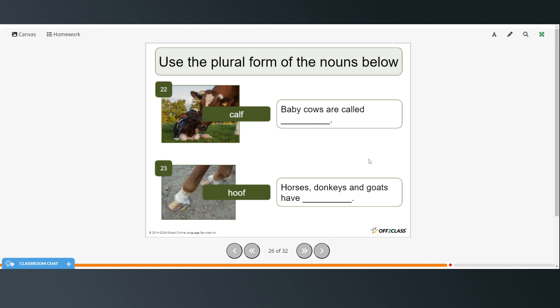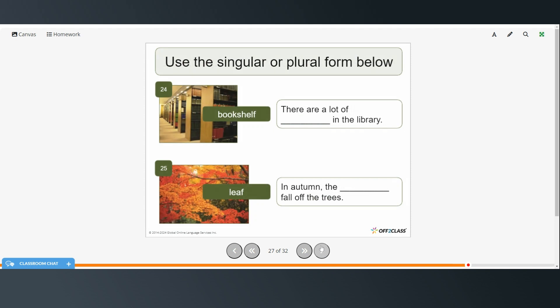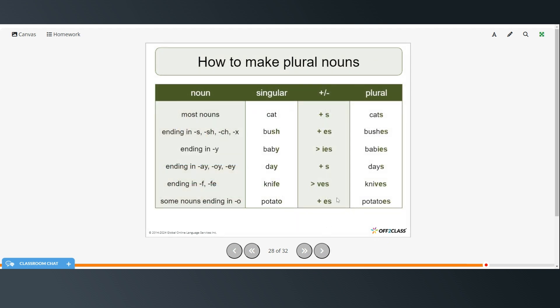Okay, and now we have some other plurals. So baby cows, so baby cows are called calves, calves. And the L is sort of silent, so calves. And horses, donkeys, and goats have hooves. Again, you take off the F and add V-E-S. There are a lot of bookshelves in the library. In autumn, the leaves fall off the trees.